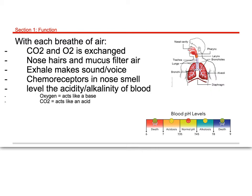Oxygen, when you breathe it in, acts like a base — not that it is a base — and helps move blood pH in the basic direction. A high level of CO2 acts like an acid. If you're breathing into a bag while hyperventilating, you're actually causing acidosis, which means high levels of CO2 in the blood. With each breath of air, we are trying to normalize that blood pH level.